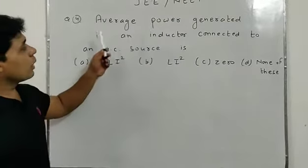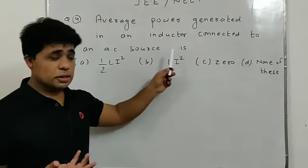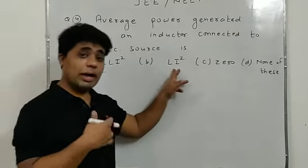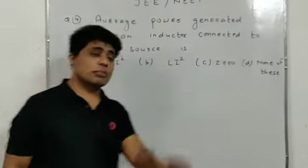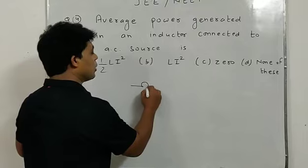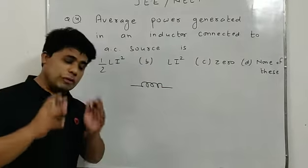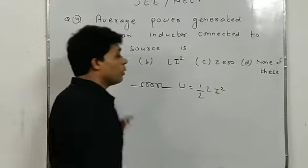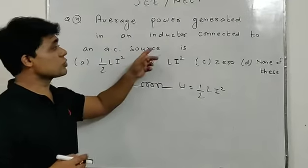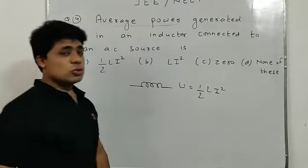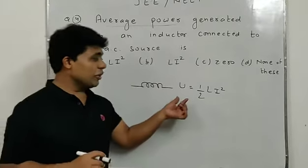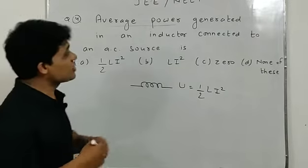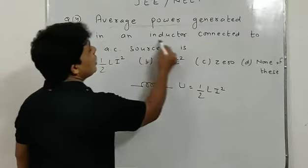Question number four: Average power generated in an inductor connected to an AC source. Options: half LI², LI², zero, or none of these. This is a tricky question. The energy stored by an inductor is half LI², but he is asking about average power generated — not energy stored.